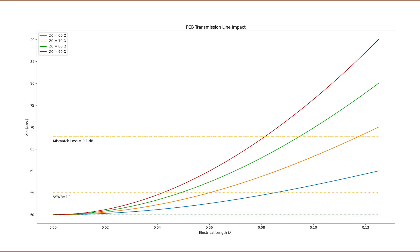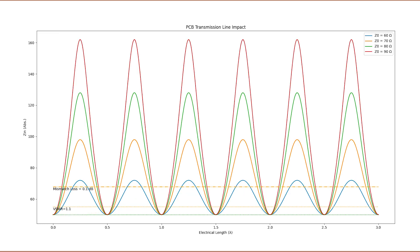From the graph it's obvious that any length except zero of a mismatched PCB trace has an influence on the impedance seen by the source. It should be noted that there is some periodicity in the transmission line equation and therefore the resulting impedance repeats every half wavelength.